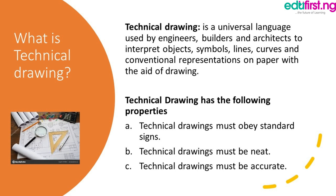Going forward, technical drawing has the following properties. A: Technical drawing must obey standard signs, meaning that it is the same sign across all fields of engineering. B: Technical drawing must be neat, meaning that there must not be staining on the drawing. C: Technical drawing must be accurate — when you give a measurement it must be accurate, and anybody who checks it will confirm the same measurement.